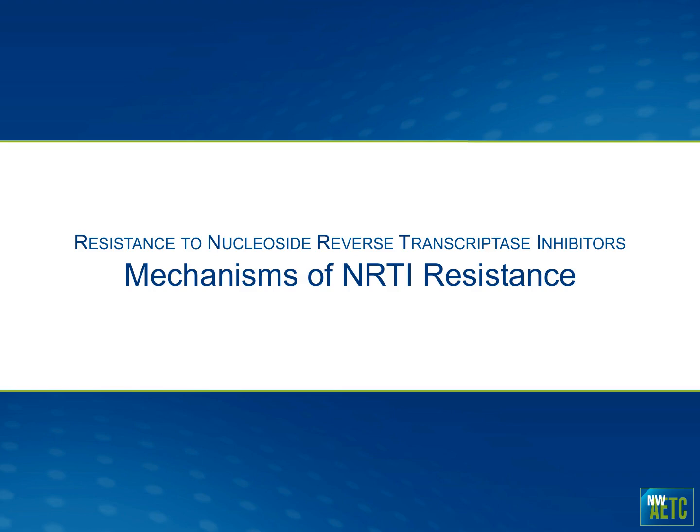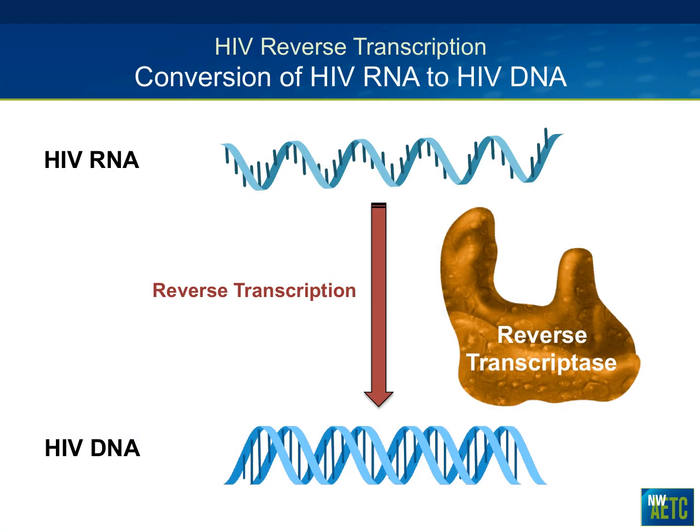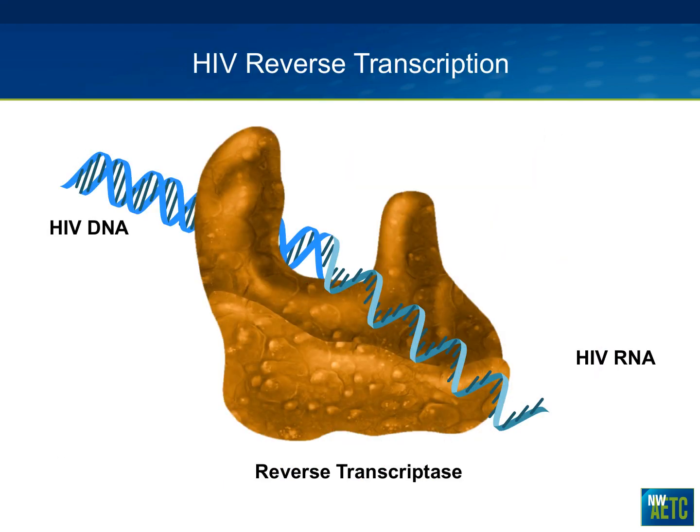Let's look at the mechanisms of NRTI resistance. When we're talking about NRTI resistance, we're really talking about what NRTIs do to block the process of HIV transcription — the process of HIV converting from RNA to DNA. This reverse transcription process is led by the enzyme reverse transcriptase.